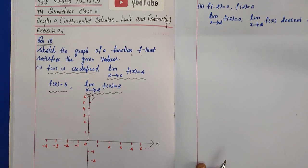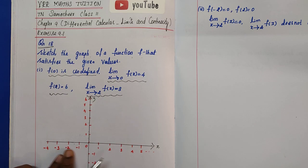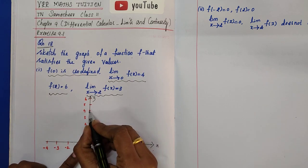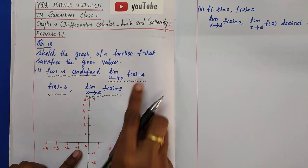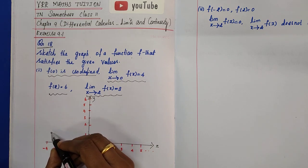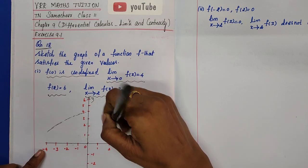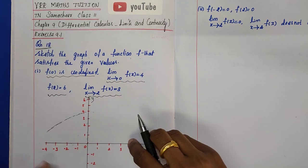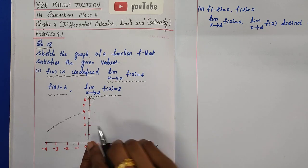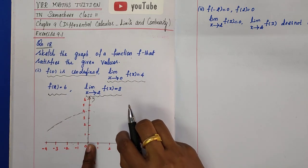First condition: limit as x tends to 0 of f(x) equals 4. At x equals 0, approaching from the left side, f(x) tends to 4. Approaching from the right side, f(x) also approaches 4. So as x reaches 0 from either side, our f(x) value reaches 4.